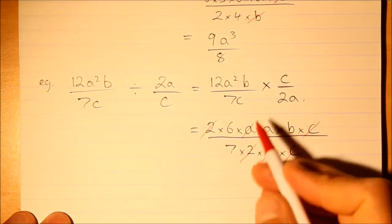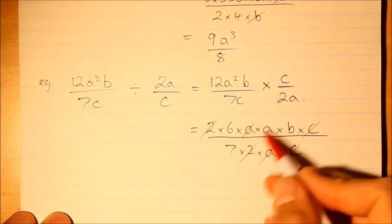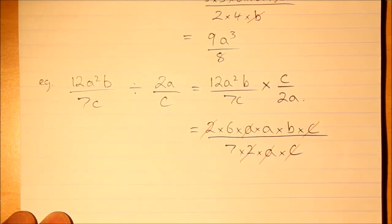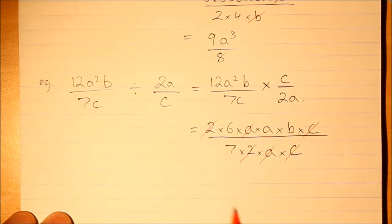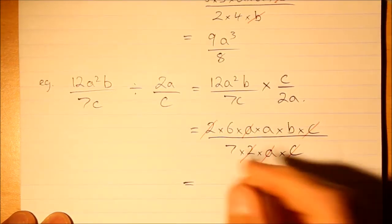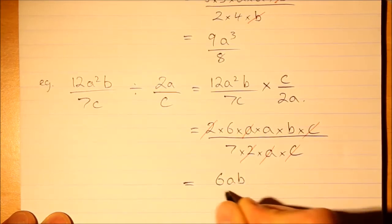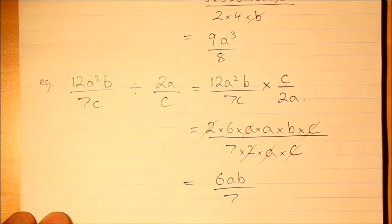Remember, you can only do this from the top to the bottom. You cannot cancel common factors next to each other, that's an illegal operation and the maths police will come and get you. So stick to cancelling factors from the top and the bottom. And then we can put it all back together: 6ab over 7.